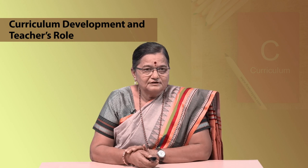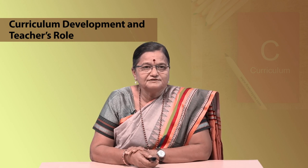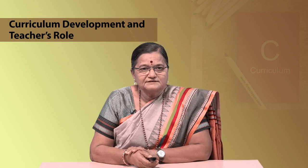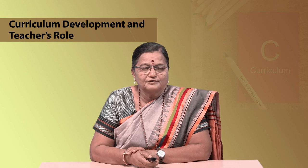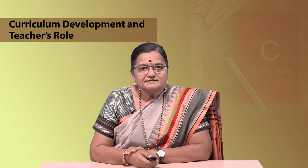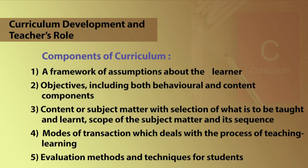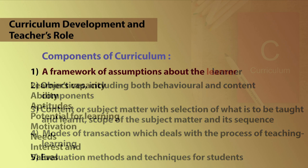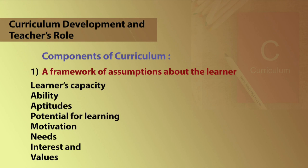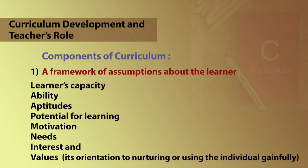After this discussion regarding the concept of curriculum from various definitions, now we will consider the second point, that is components of curriculum. A curriculum has five components. The first one is a framework of assumptions about the learner — that is the learner's capacity, ability, aptitudes, potential for learning, motivation, needs, interest and values — and the society, meaning its orientation to nurturing or using the individual gainfully.